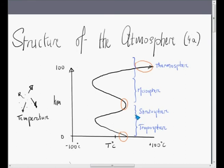And then the boundaries between the layers all have particular names. So this boundary between the troposphere and the stratosphere is called the tropopause. And between the stratosphere and the mesosphere you can guess of course is going to be the stratopause. And between the mesosphere and the thermosphere obviously then mesopause.